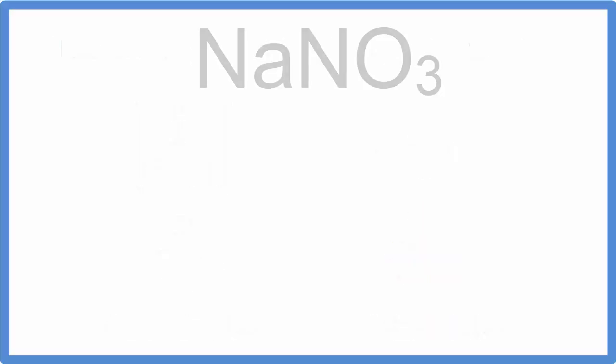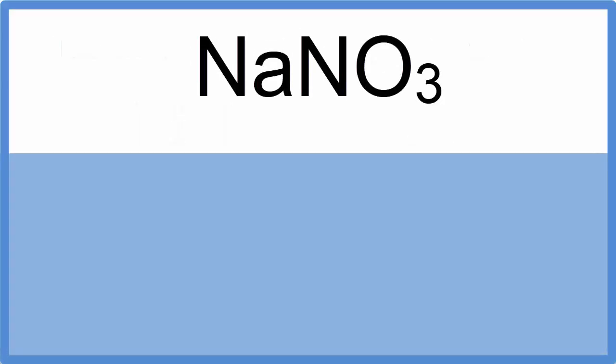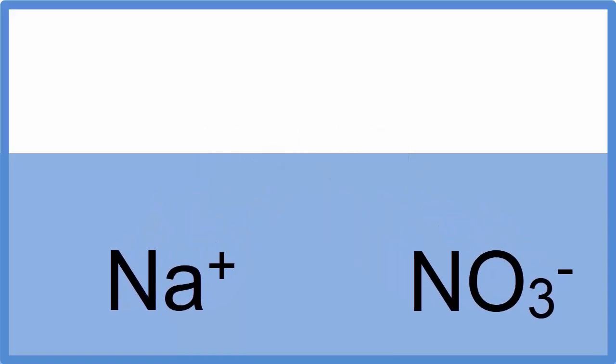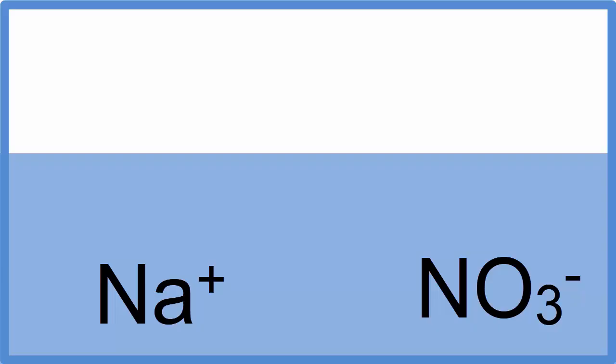For example, if you put NaNO3 in water, it would dissolve into Na+, that's the sodium ion, and NO3-, the nitrate ion. The NO3-, that nitrate ion, stays together and has a minus one charge, just like the sodium has a plus one charge.